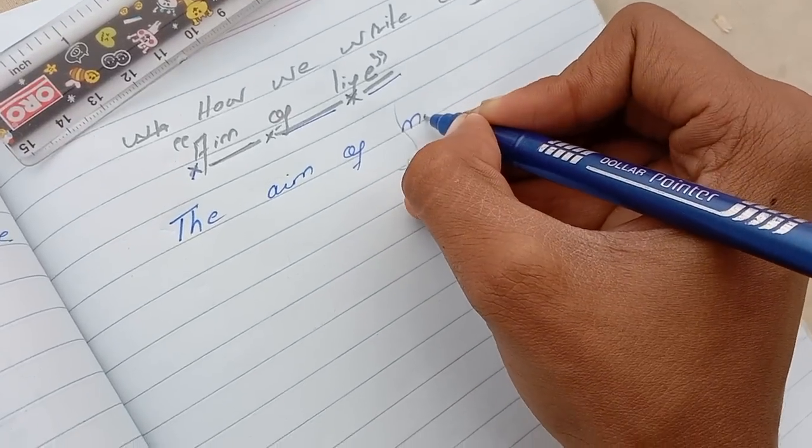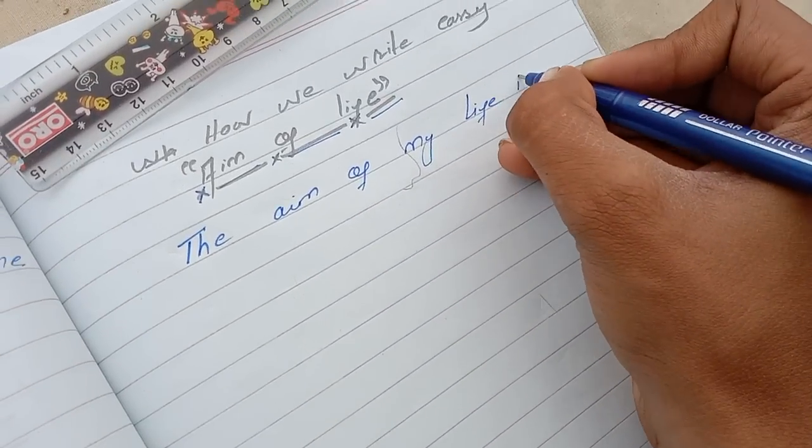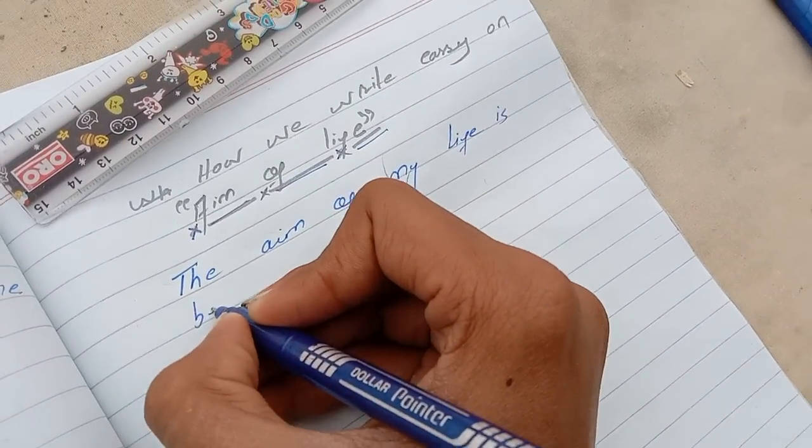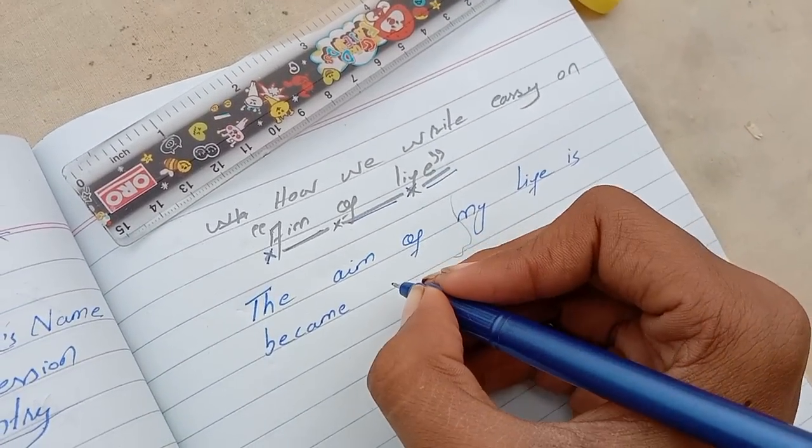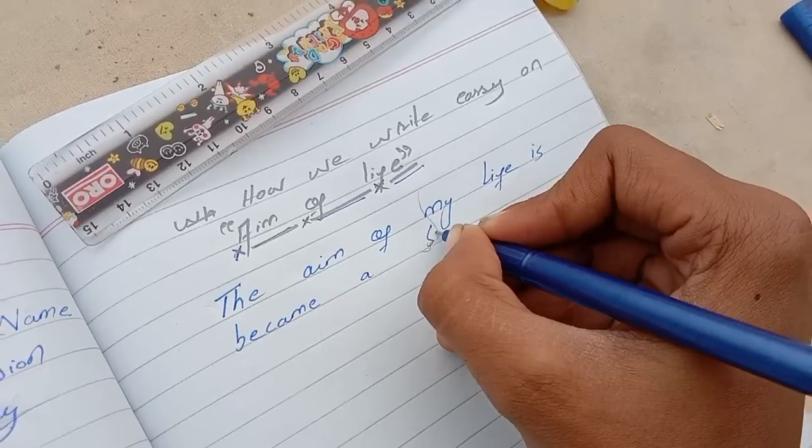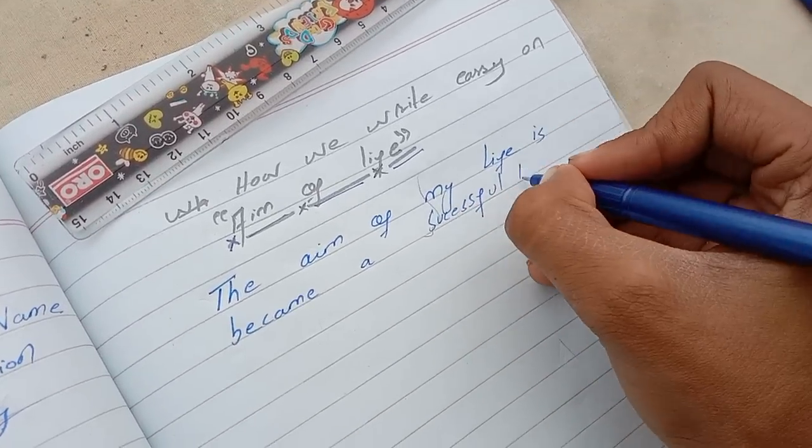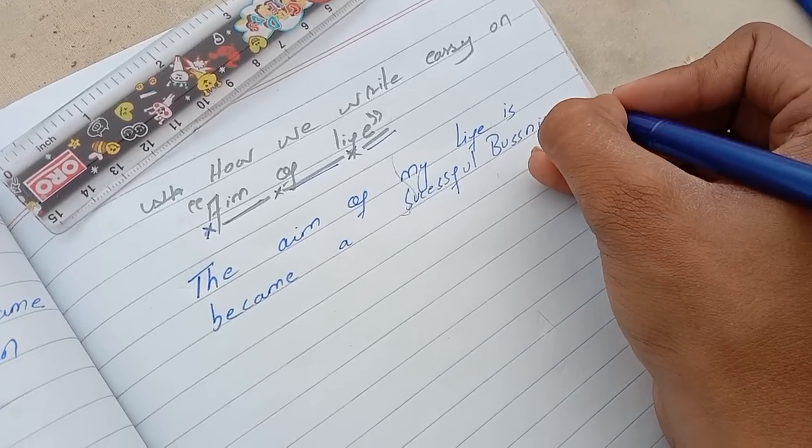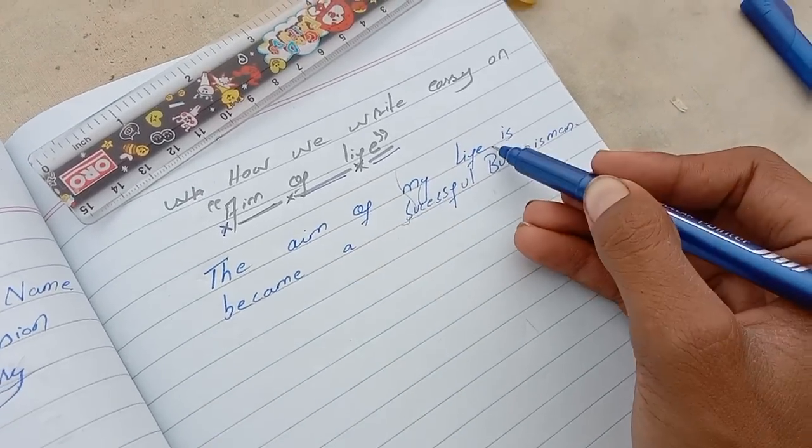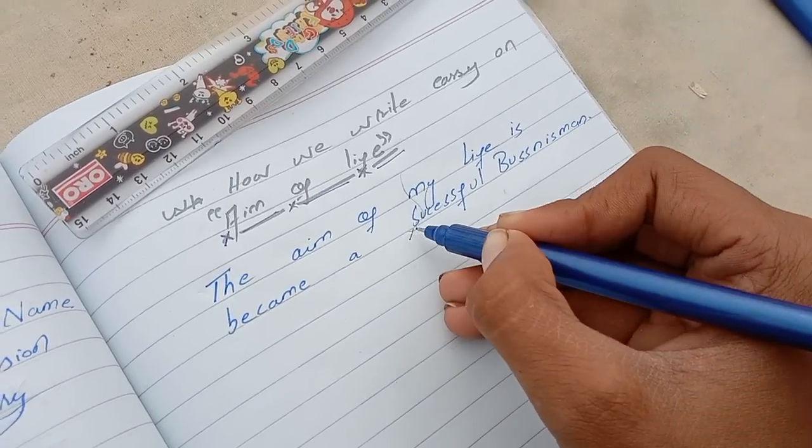For example, my aim of life is to become a successful businessman. First of all, the aim of life you write down - this is my aim, to become a successful businessman.